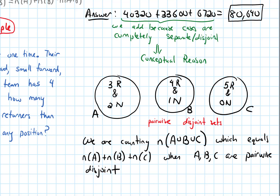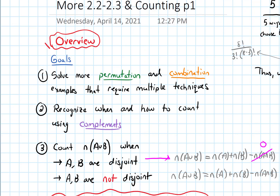In a later video in this section, we'll look at how we can do counting problems like this when we're trying to find the number of elements in a union of two sets but our sets are not disjoint. We have finished the first part of goal number three, which is counting the number of elements in a union — one case or another case — when our sets are disjoint, or in this case pairwise disjoint because there were more than two of them.